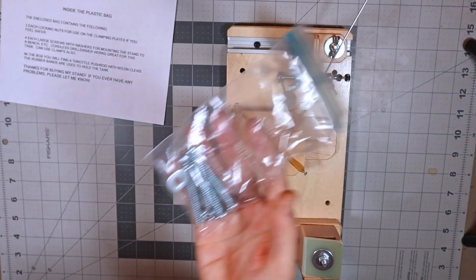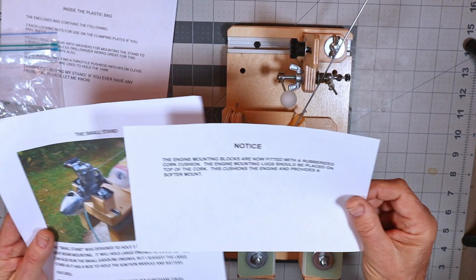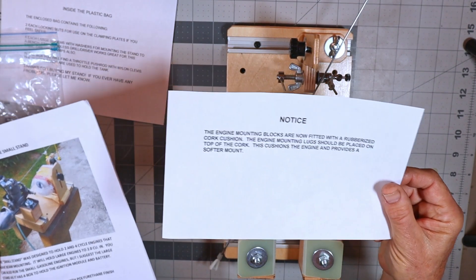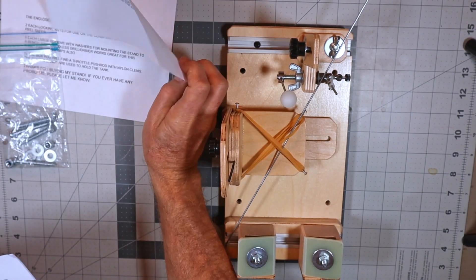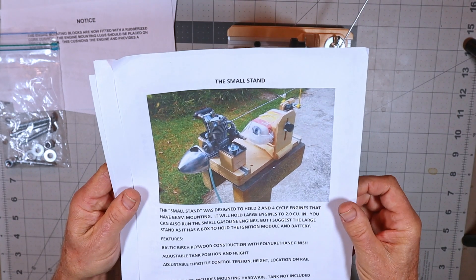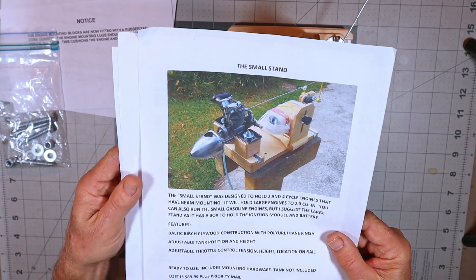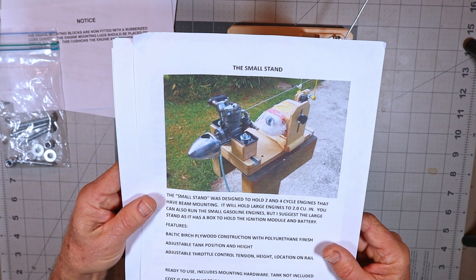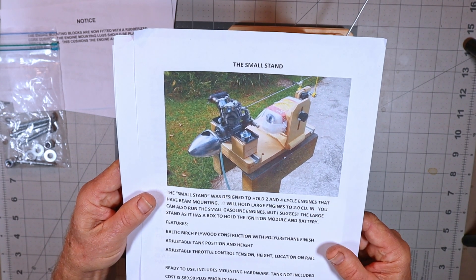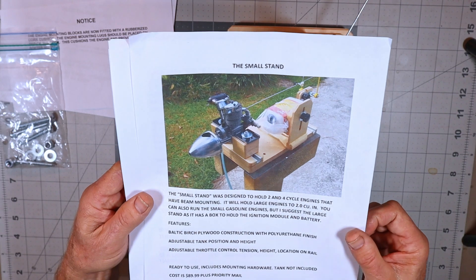But first I got all this paperwork here. Here's a piece of paper that explains the contents of the screws in this bag, washers and stuff. Then here's another notice of an upgrade he had made to this stand, and then here's where it says that this is the small stand designed to hold two and four cycle engines that have beam mounting, will hold engines up to two cubic inches which we will test, and small gasoline engines.